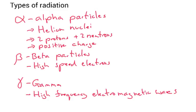Types of radiation. There are actually three types of radiation. Two of them are particles. The first type is called alpha particles. They are actually helium nuclei. They consist of two protons and two neutrons. They've got a positive charge.